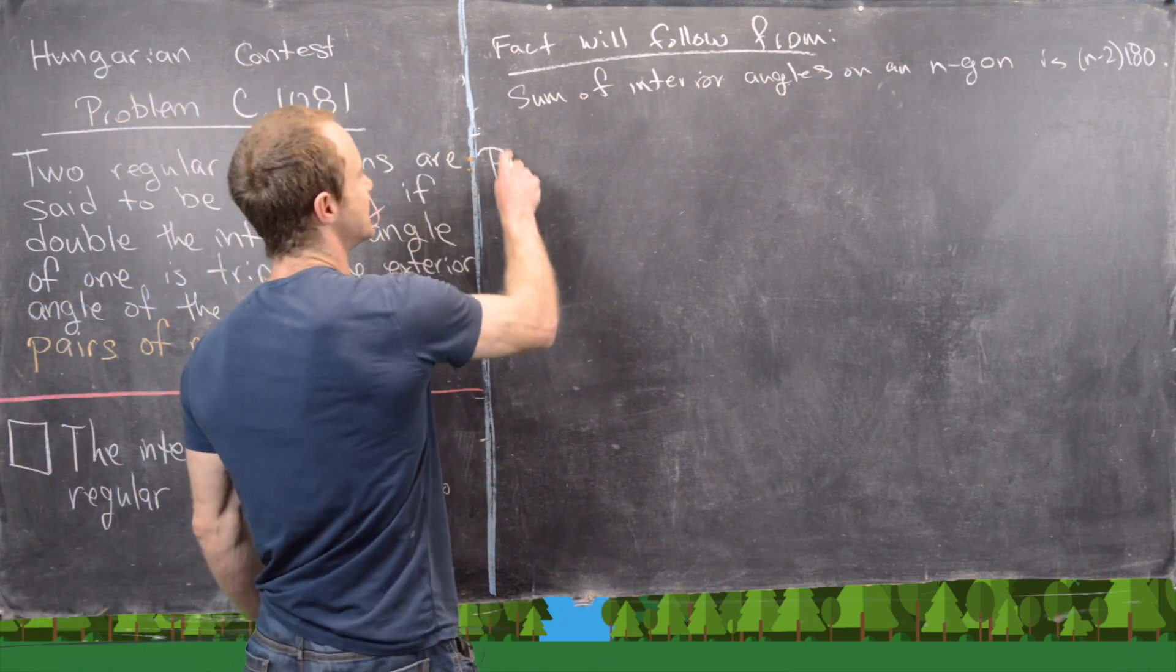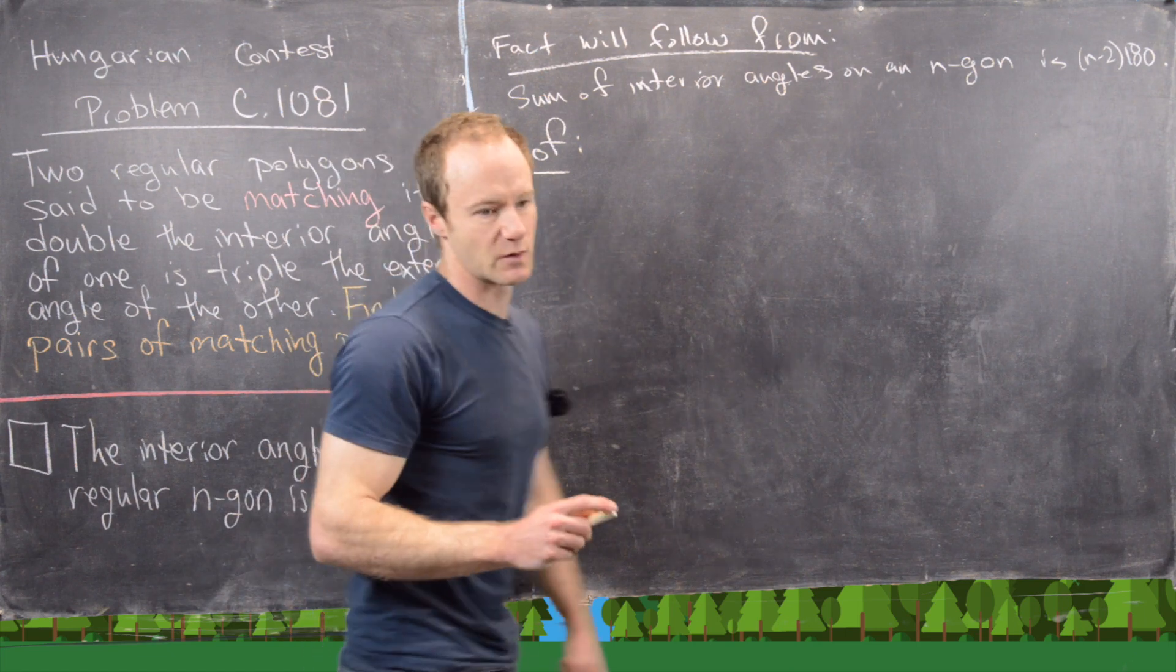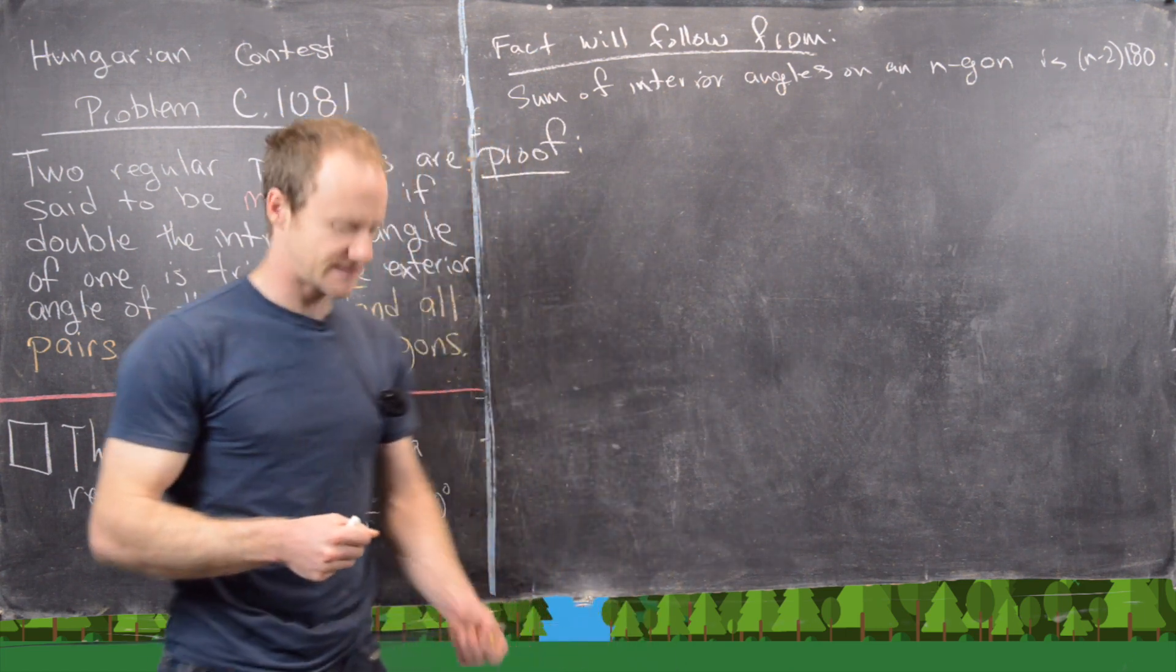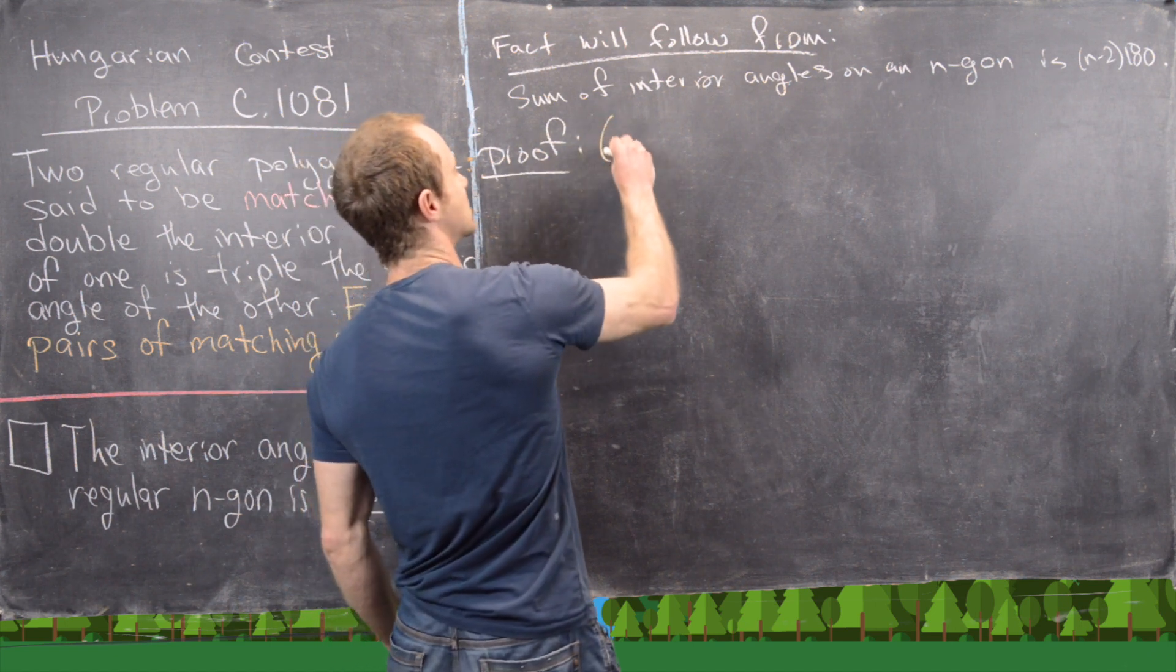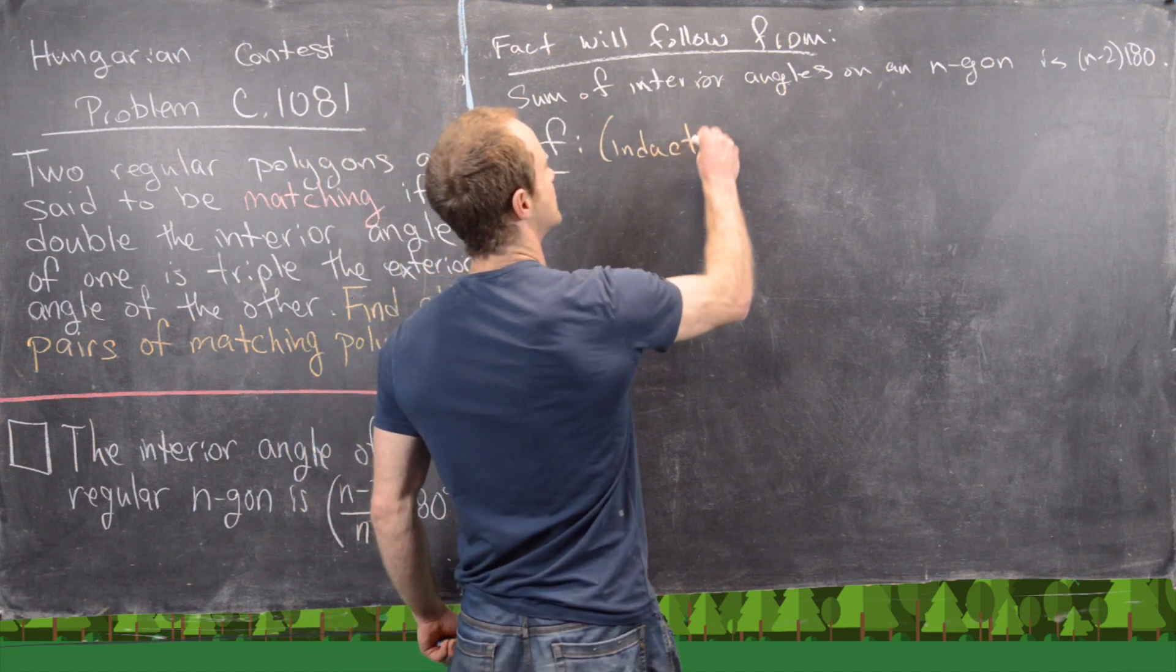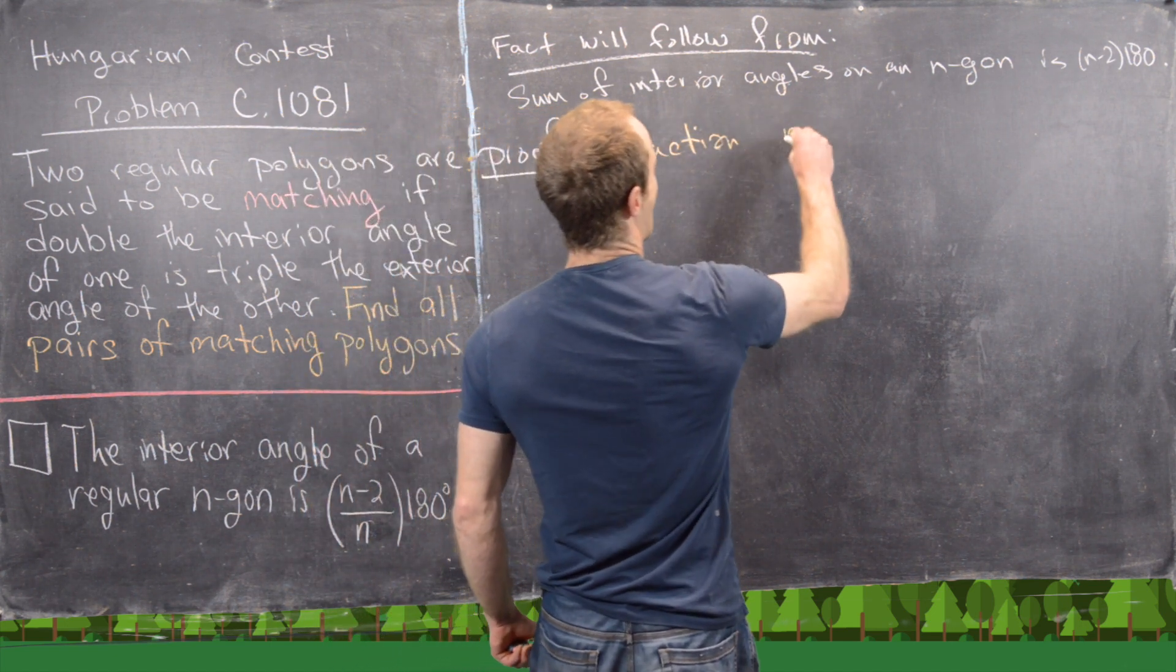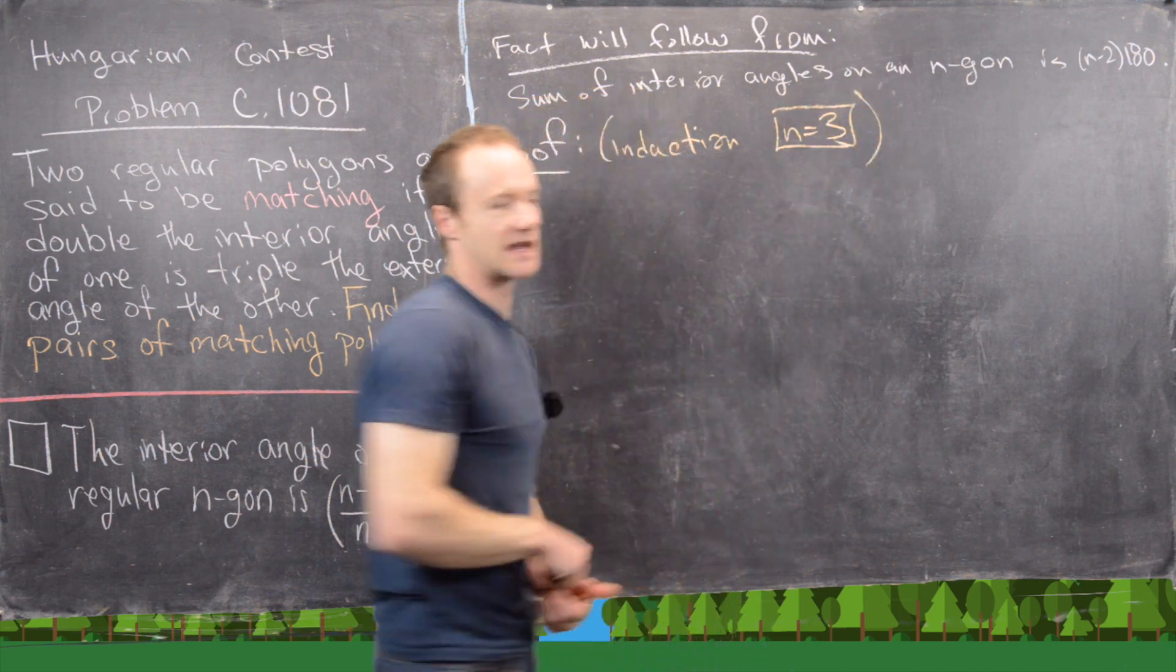We're actually going to prove this fairly carefully. This is something you could state in a math contest. And we're going to do this by induction starting at n equals 3. That'll be our base case, in other words, a triangle.